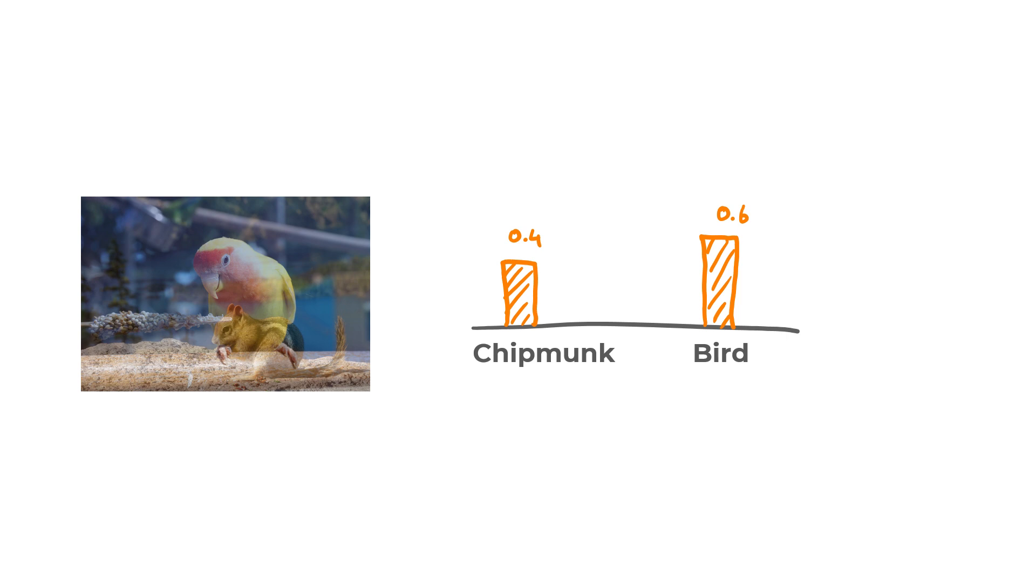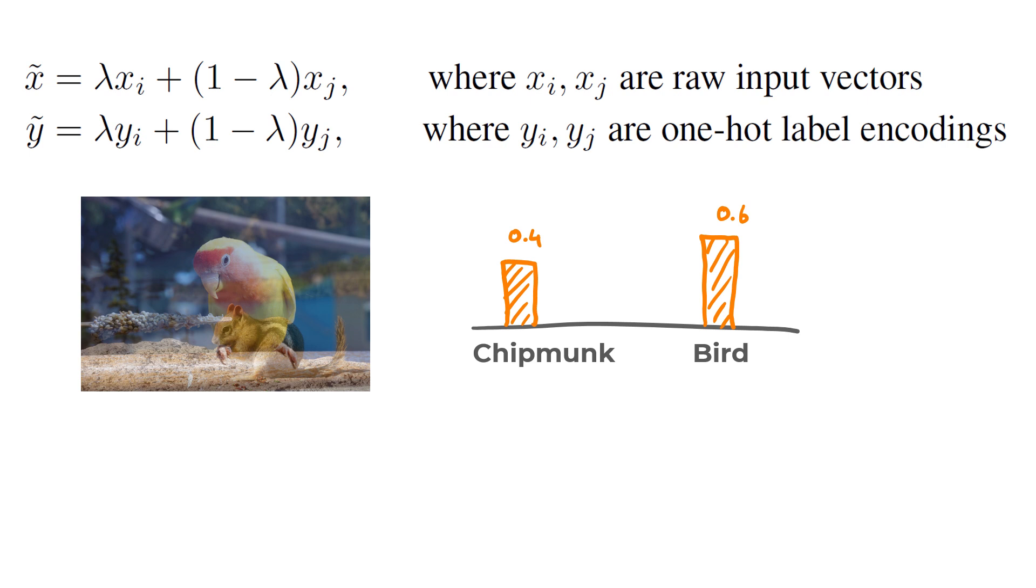For example, for an image classification task, that would mean blending the input images with some transparency and using the same blending parameter to compute a weighted average of the output labels.